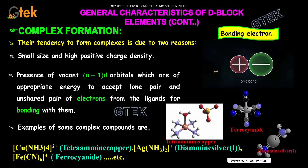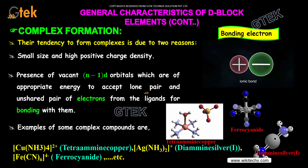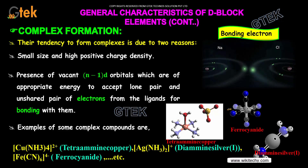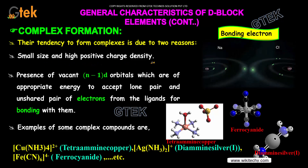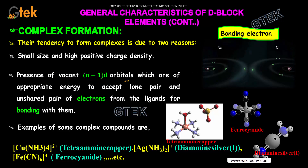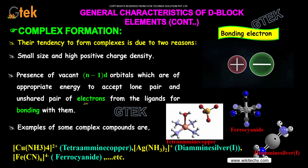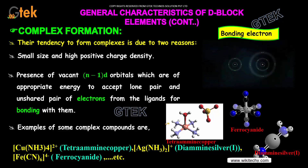Why does complex formation occur? The tendency for complex formation is due to two reasons: the small size and high positive charge density, and the presence of vacant (n-1)d orbitals which are of appropriate energy to accept lone pairs and unshared pairs of electrons from the ligands for bonding with them.